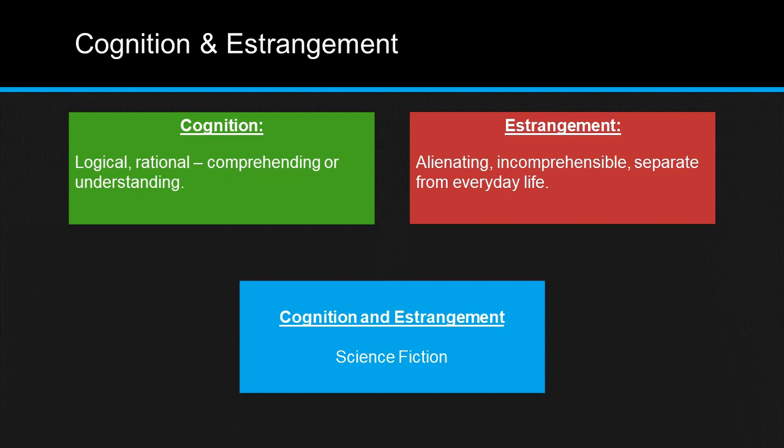Now, estrangement — the other aspect — might be the harder one to understand. Estrangement comes from Brecht's work, and it is a form of alienation. It is what alienates us from our own familiarity or everyday life. Science fiction strikes a balance between the two polarities: we can understand something, but still feel alienated by it.